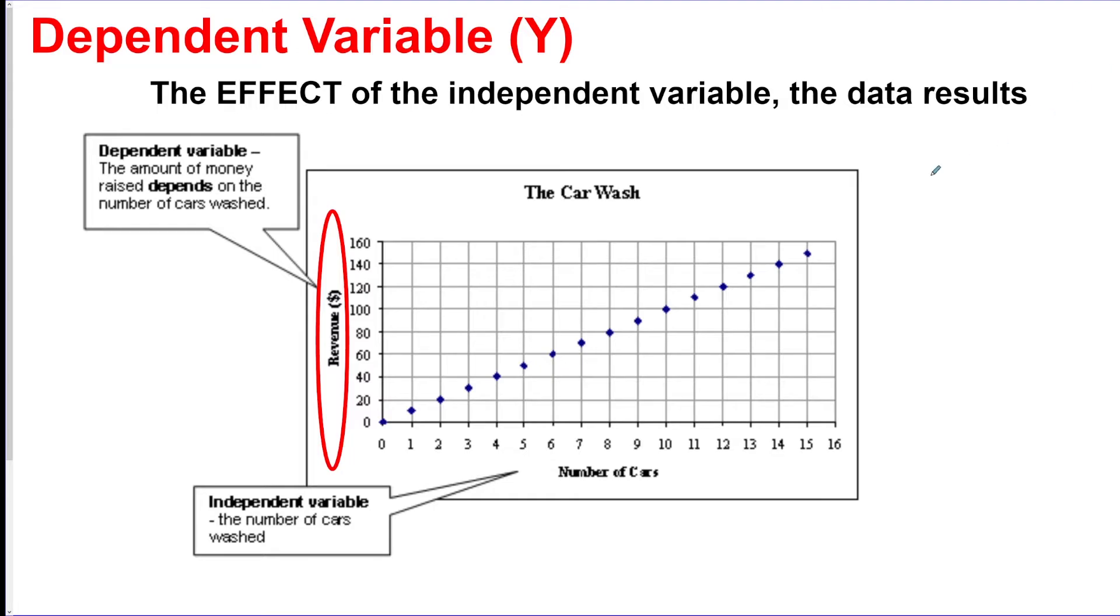The dependent variable is what you're going to be measuring in the experiment, so that's going to go on the y-axis. And the way I remember this is lowercase d with the little arrow on top, so you can remember that the dependent goes on the y because it's up and down.